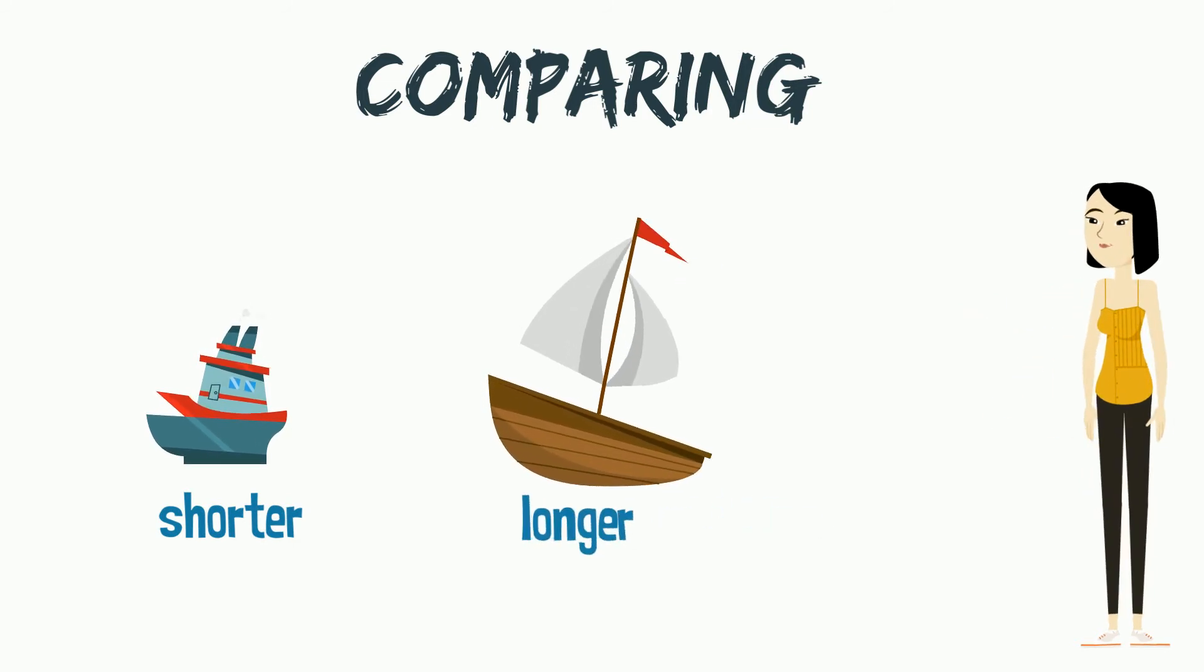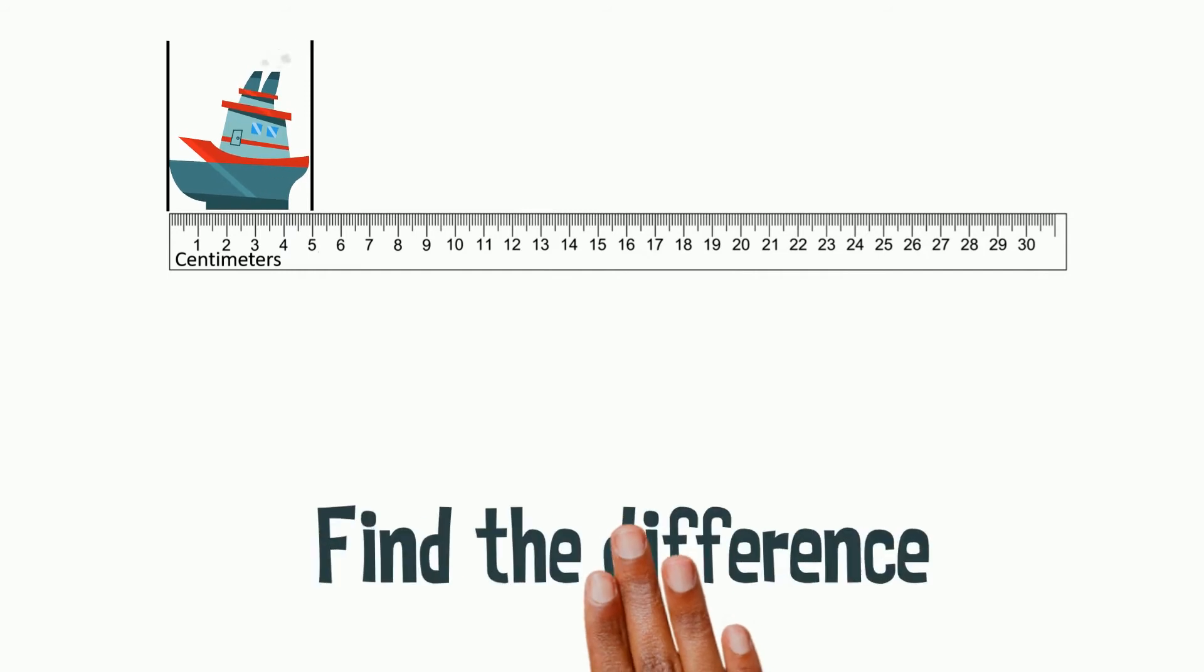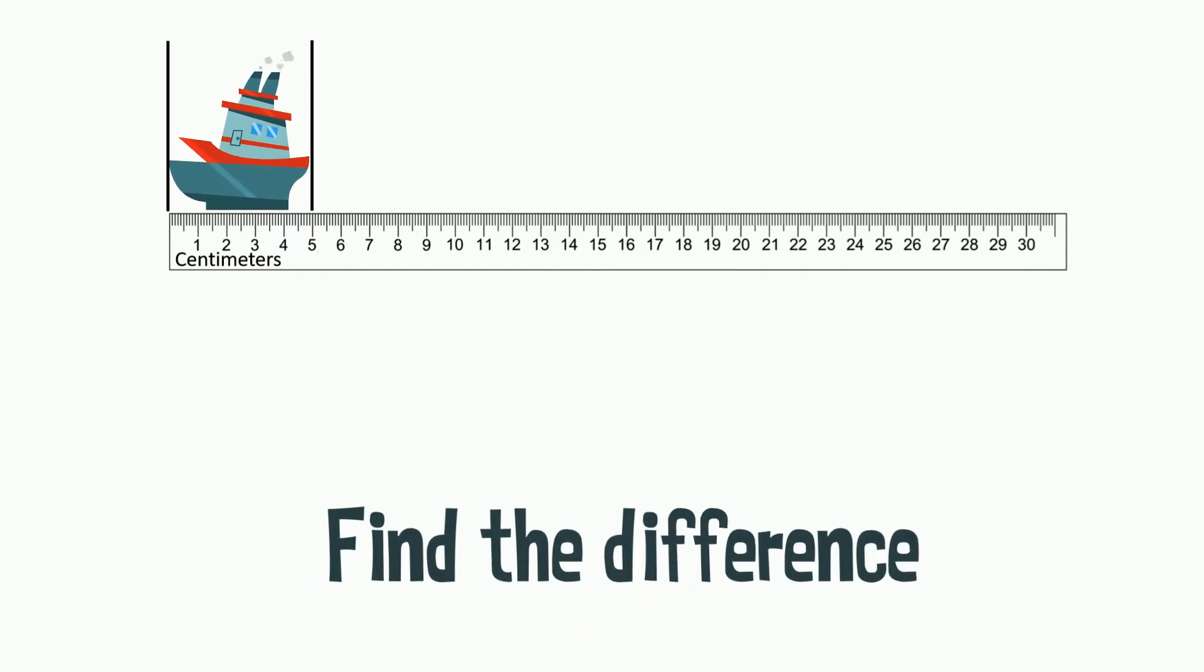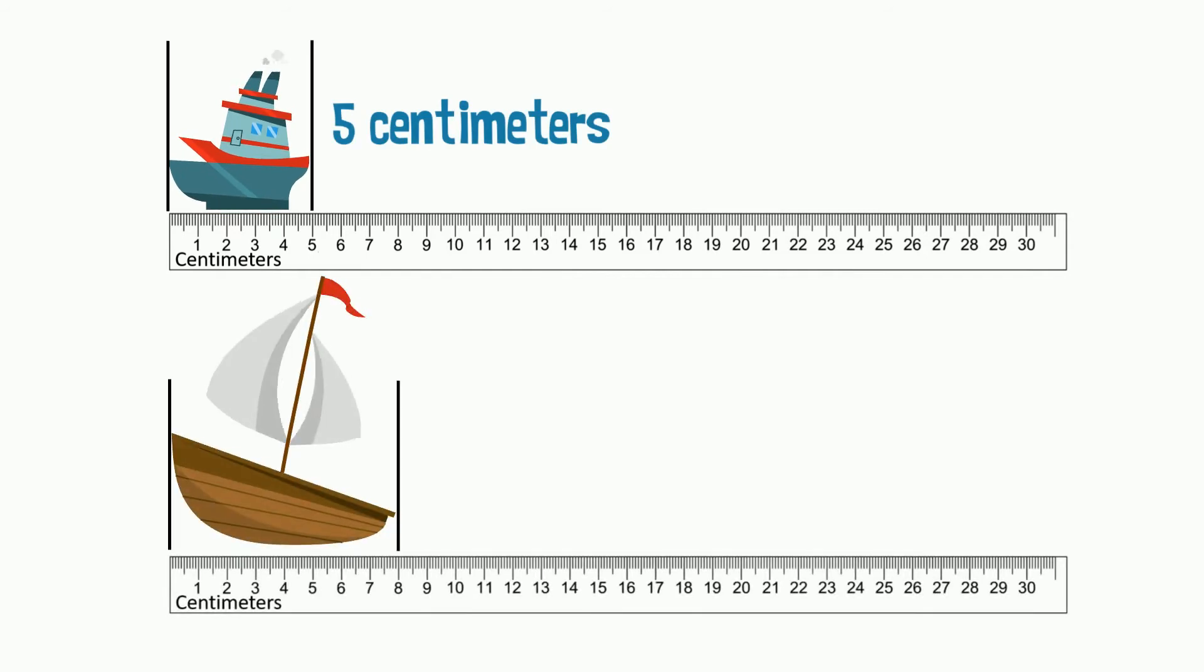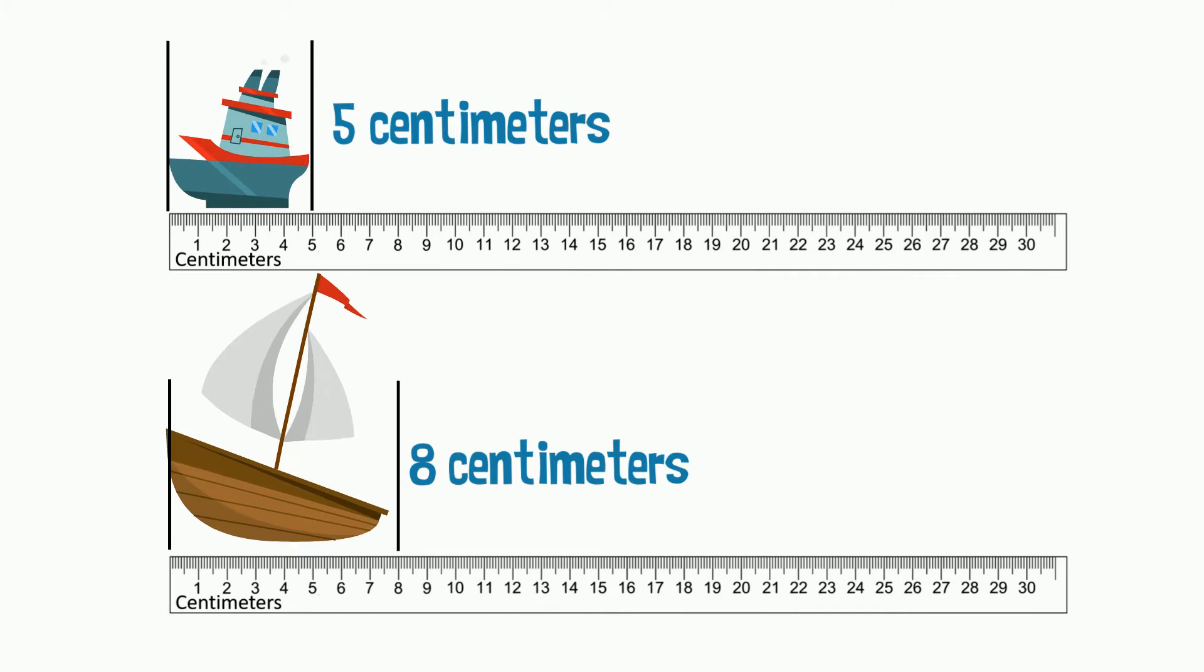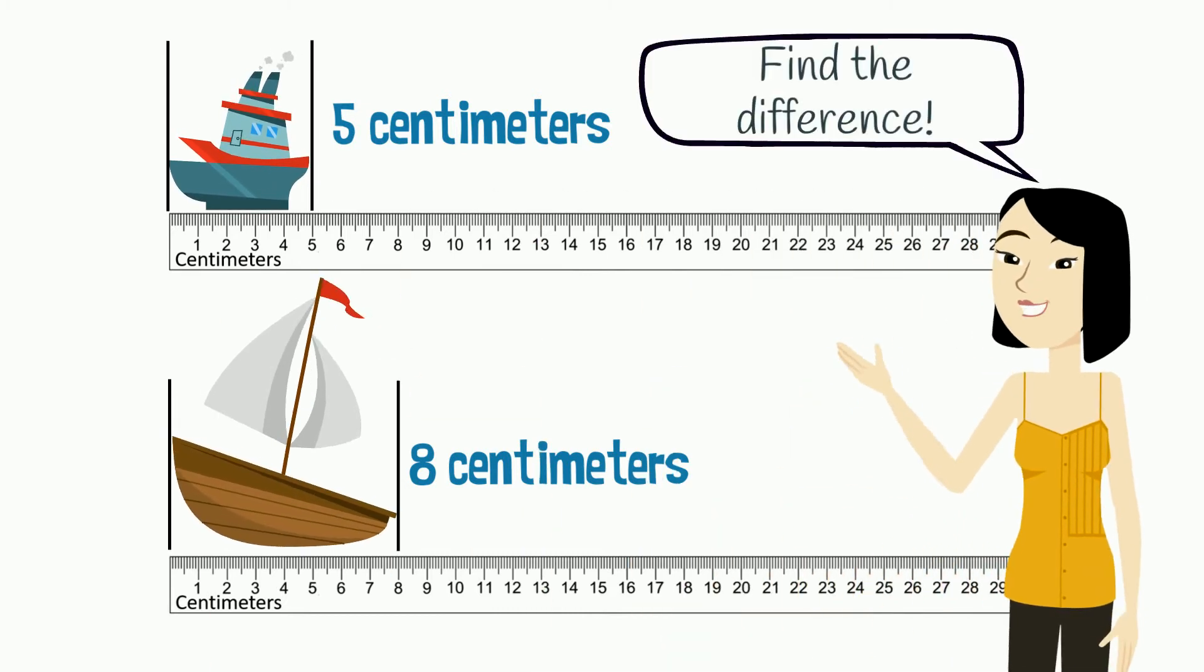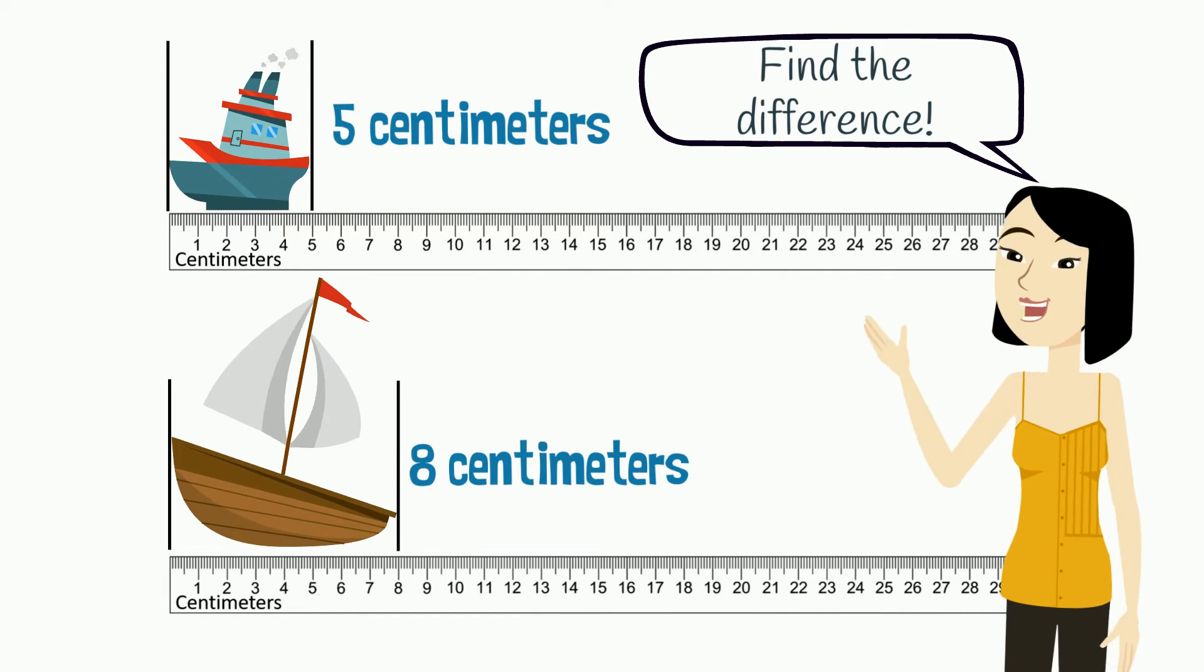I can also compare them using numbers to find the difference between the lengths. Remember, the first boat measured five centimeters long and the second boat measured eight centimeters long. I know that in order to find the difference between two objects, I must subtract.